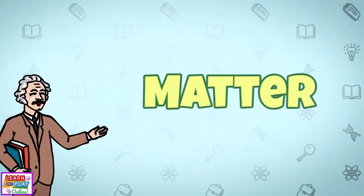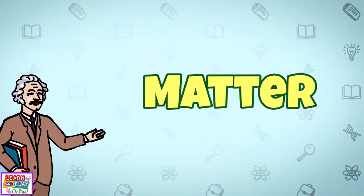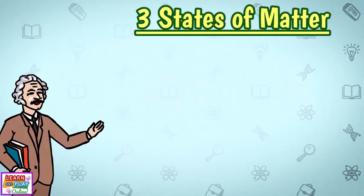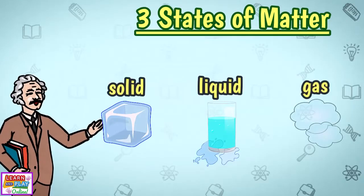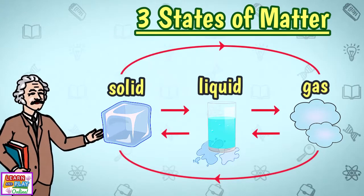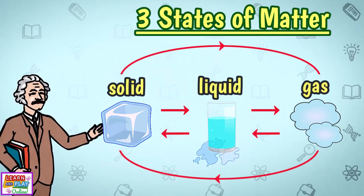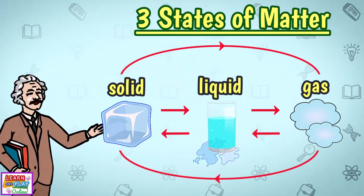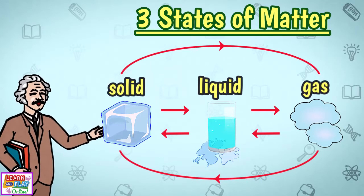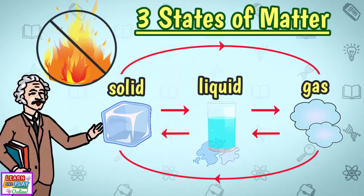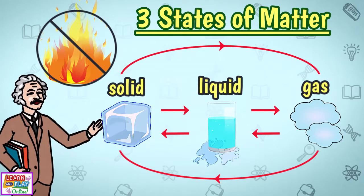As we have learned, almost everything around us is made out of matter and there are three states of matter: solid, liquid, and gas. But did you know that it is possible to change from one state of matter to another? In order for this to happen, a form of energy needs to be used. In this instance, heat energy, or lack of heat energy, is the key to changing one state of matter into another.